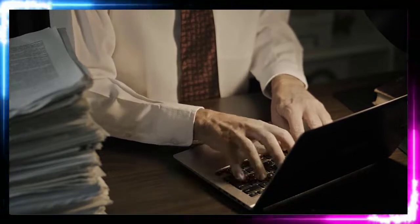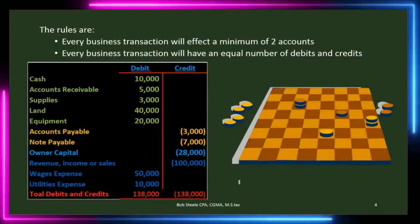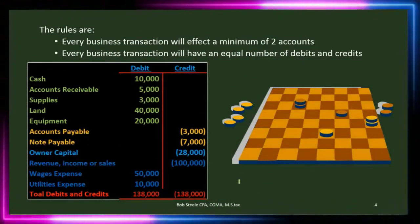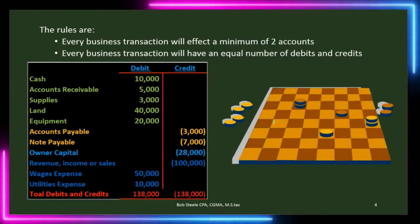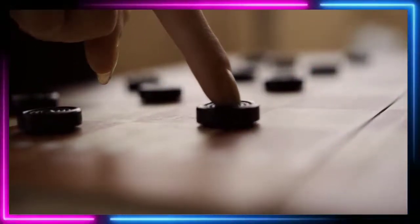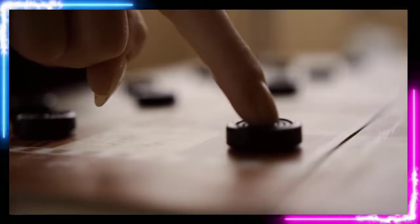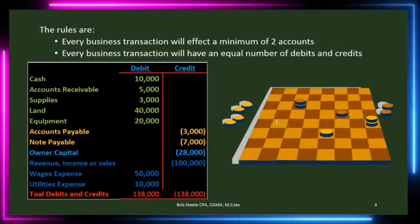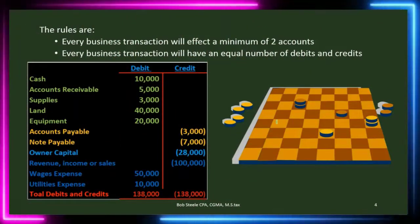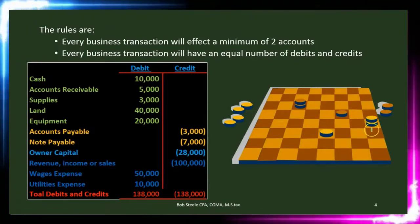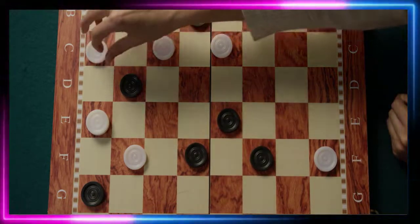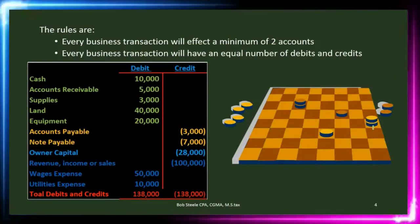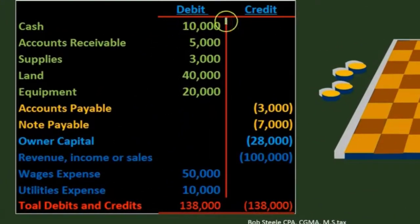We're going to compare the double entry system to a puzzle or a game. We first need to learn the rules of the game — how the thing is set up, what the board is, what the pieces are, how to set the pieces on the board, and then how to move them. Once we know that, it becomes a lot more interesting to play the game, just as with a game of checkers. Checkers is played on a board with different colored pieces and squares, moved according to a set of rules.